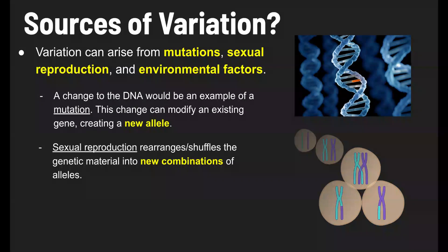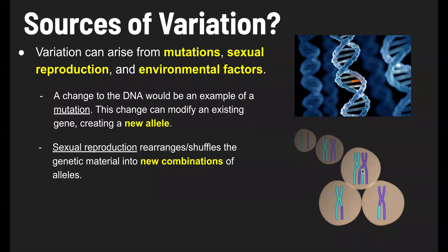Sexual reproduction rearranges or shuffles the genetic material into new combinations of alleles. Chromosomes have genes on them, and if you begin exchanging parts of the paternal chromosome with parts of the maternal chromosome, you can get new combinations of alleles. That's what you're seeing in this image — these chromosomes overlap, and a part of one chromosome is now on a different chromosome. That creates a new combination of alleles, and that's where you get some variation from.